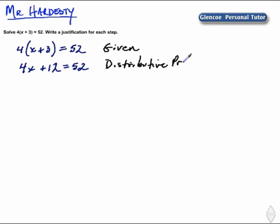In our next step, we want to isolate and get x by itself, so we'll subtract 12 from both sides. And that is the subtraction property of equality, so we'll justify that with subtraction.